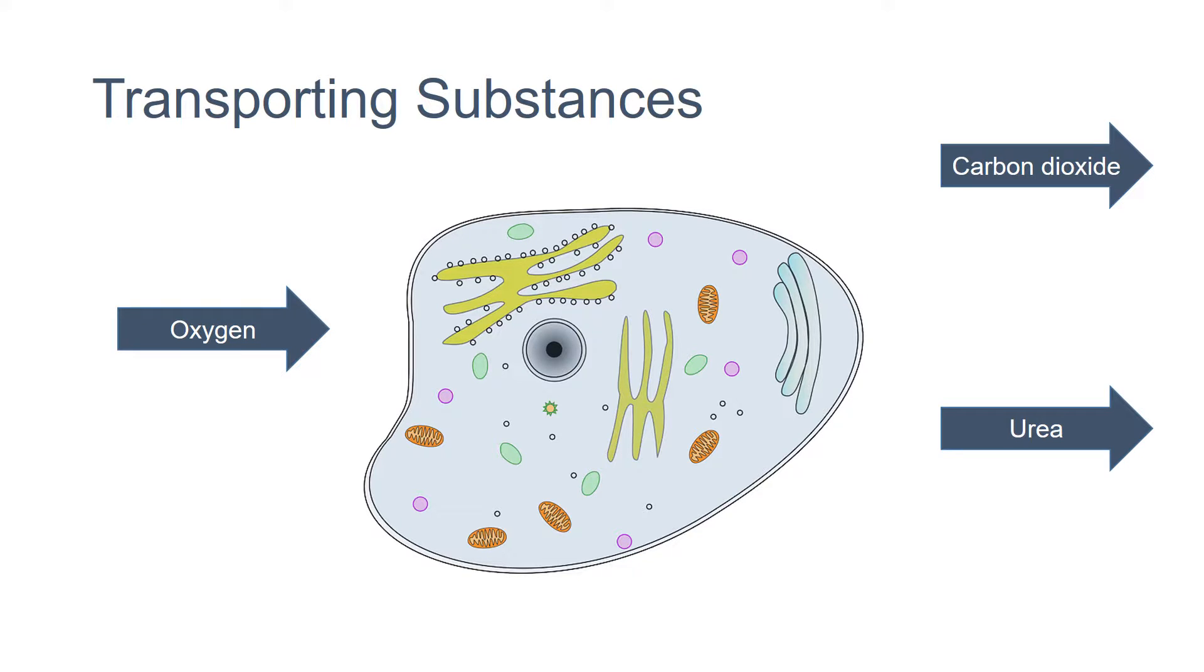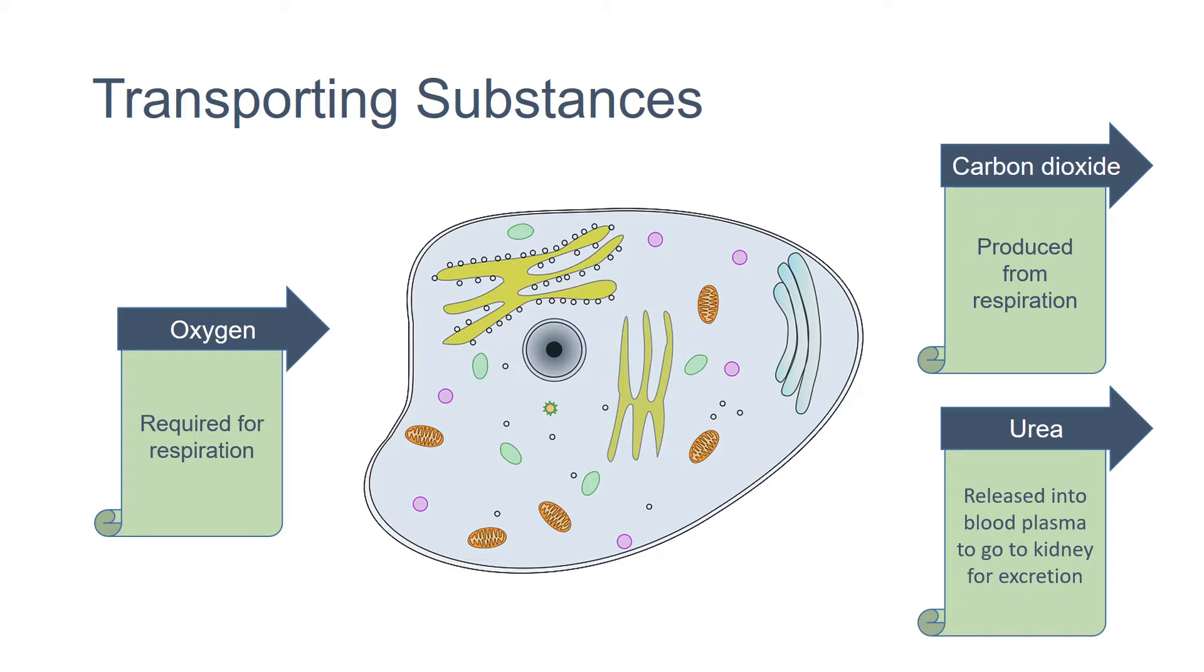There are many substances transported in the body via diffusion. The main substances transported in and out of cells by diffusion are oxygen, which is required for respiration, carbon dioxide, which is produced by respiration, and urea, which is removed from cells into the blood plasma for excretion in the kidney.